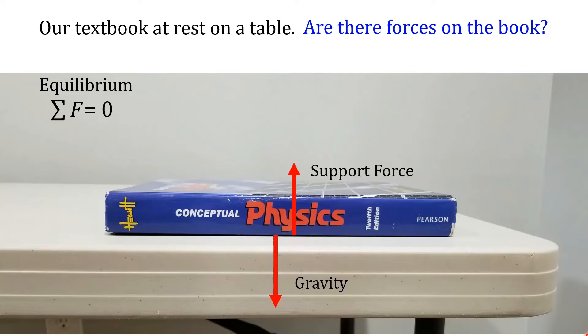So let's say the weight of this book is 13 newtons. By the way, that's about three pounds. What would the support force be? Well, if we're going to achieve equilibrium and we only have two forces and they're going in opposite directions, then that force, that support force, has to be 13 newtons.